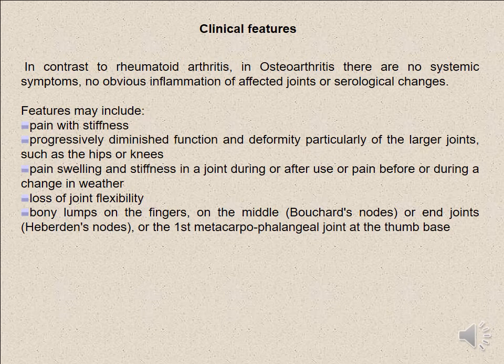The clinical features of osteoarthritis, in contrast to rheumatoid arthritis, include no systemic upset, no obvious inflammation of the affected joint, and no laboratory changes. Features may include pain, stiffness, progressively diminished function, and deformity — particularly of large joints such as the hip or knee. There is also pain, swelling, and stiffness in joints during or after use, loss of joint flexibility, and pain before or during changes in weather.